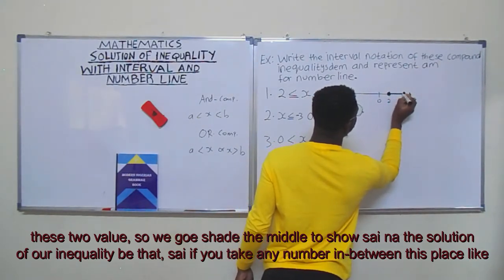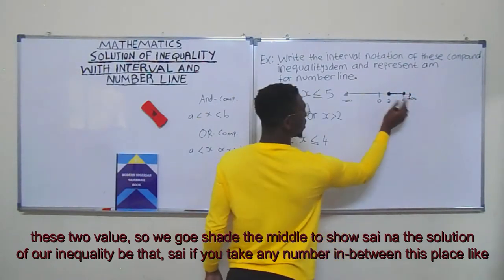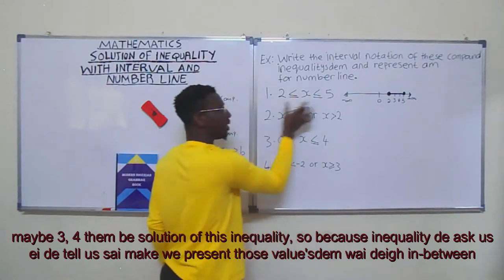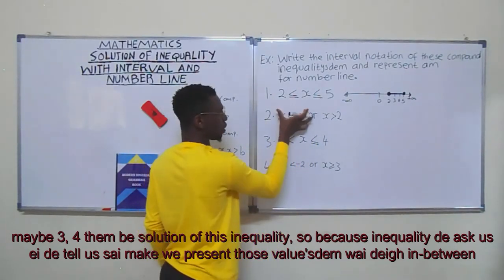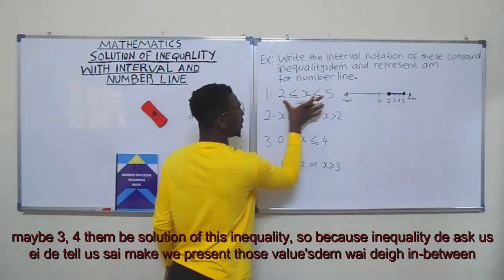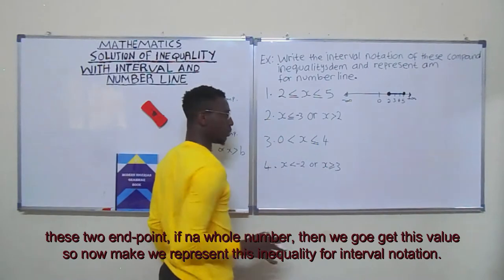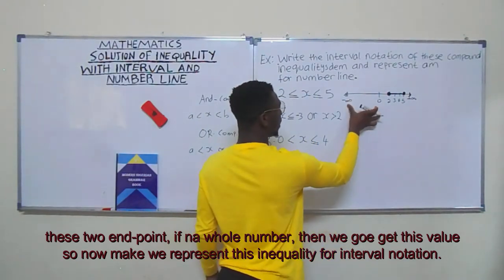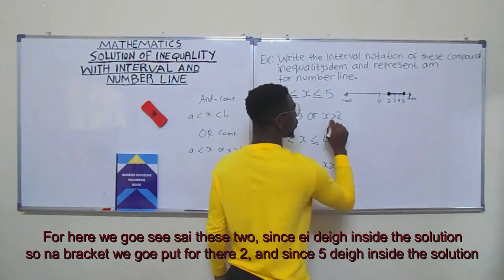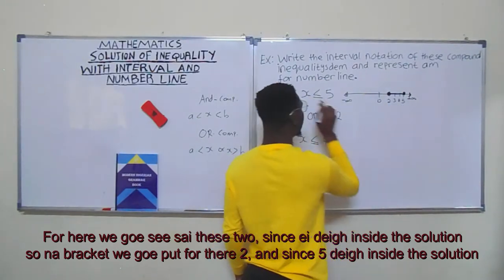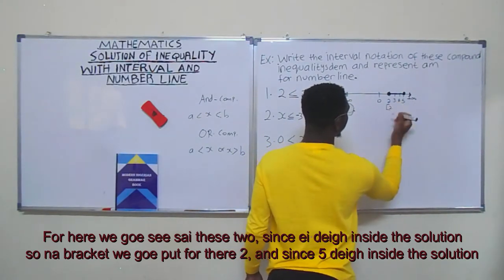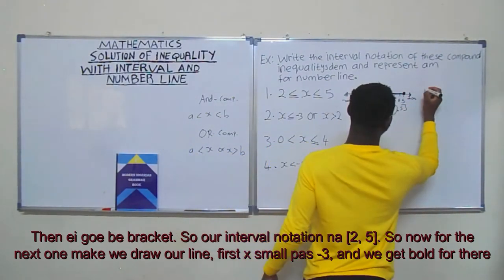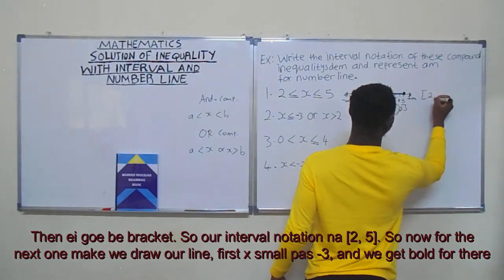The solution of our inequality includes any number in between, like three, three point something, four — all of them are solutions. The inequality's x tells us those values in between the two endpoints. To represent this in interval notation: since both two and five are inside the solution, we use brackets. So the interval notation is [2, 5].